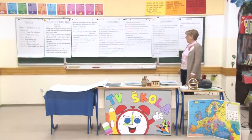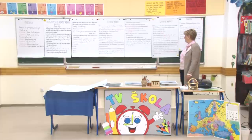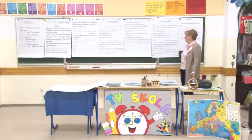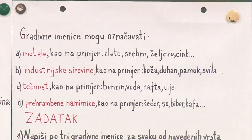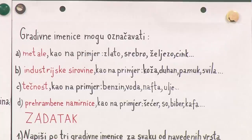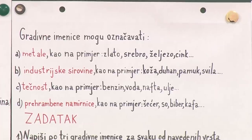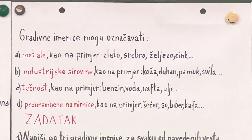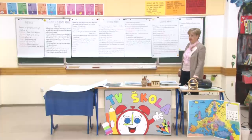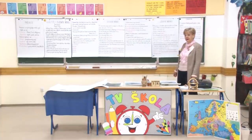Gradivne imenice mogu označavati metale, na primjer zlato, srebro, željezo, cink. Industrijske sirovine, kao na primjer koža, duhan, pamuk, svila. Tečnosti: benzin, voda, nafta, ulje. Prehrambene namirnice, kao na primjer šećer, so, biber, kafa - i neke smo ranije već spomenuli.